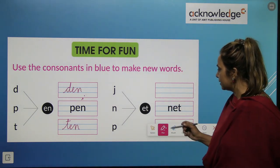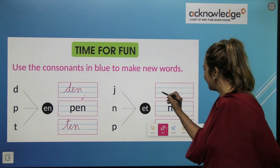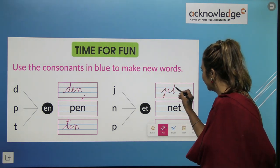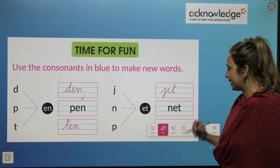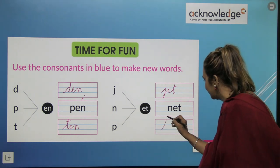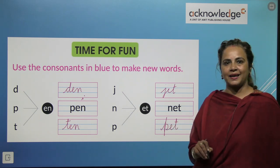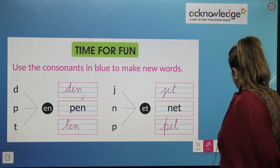Now, what is next? J, E, T. Yes, very good. My lovely is J, E, T. Jet. Good. N, E, T. Net. And P, E, T. Pet. Very good. So, what is next?